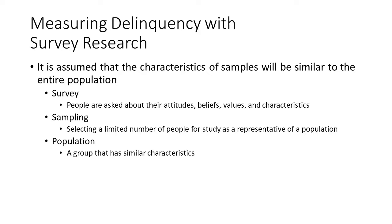Let's move on to survey research — measuring delinquency with surveys. A survey asks people about certain things like their attitudes, beliefs, values, and characteristics. The sampling is selected from a number of people representative of the whole population, where a population is a group that's similar in nature with their characteristics. There are different ways to conduct a survey; we'll focus on those important for collecting data on delinquency.